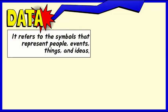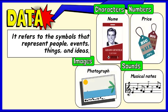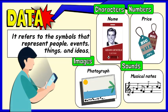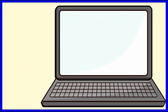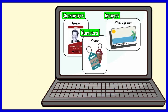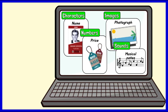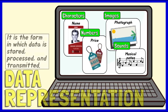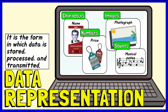The term data refers to the symbols that represent people, events, things, and ideas. Digital electronics such as mobile phones, iPods, and computers process, store, and transmit characters, numbers, images, and sounds in formats that can be handled by electronic circuitry. Those formats are what we mean by data representations.